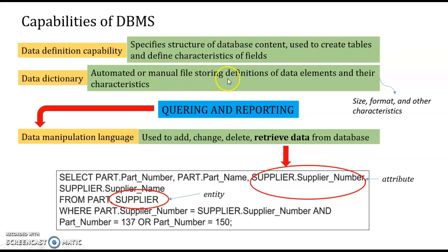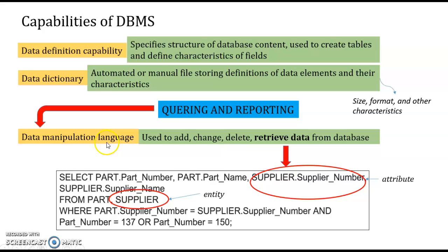The Data Dictionary is an automated or manual file storing definitions of data elements and their characteristics. It will save the size, the format, and other characteristics of data elements. The third capability is Data Manipulation Language, which is used for querying and reporting.